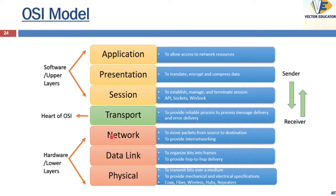At the application layer, it supplies network services to end-user applications so that communication at the application program level in a network is possible. The presentation layer works as the translator for the network, converting application data to a sending format at the sending point and from the sending format back to the application data format at the receiving station. The session layer allows two application processes on different machines to establish, use, and terminate a connection.